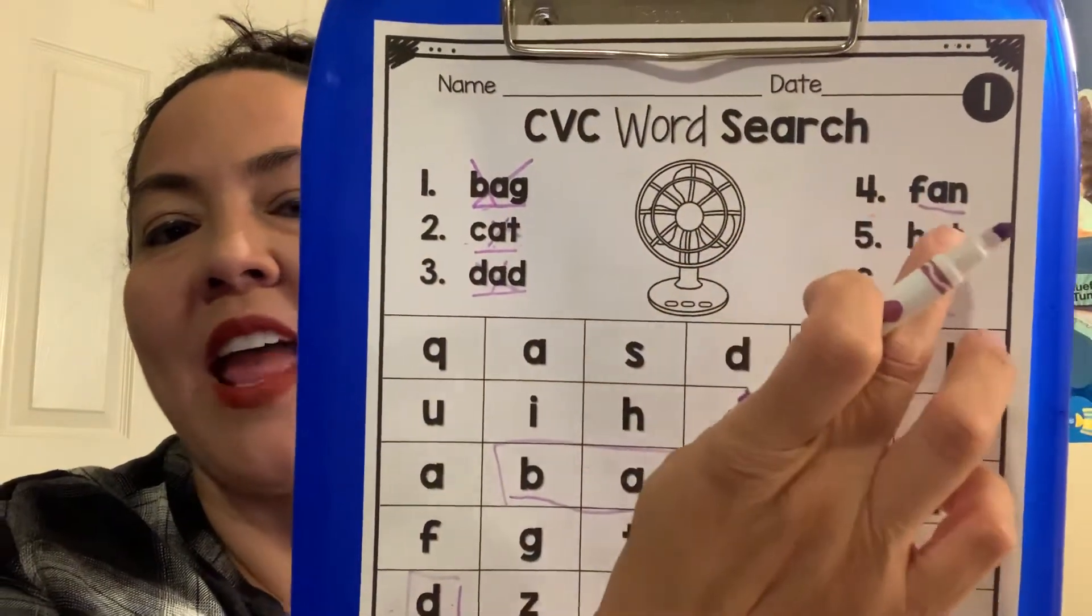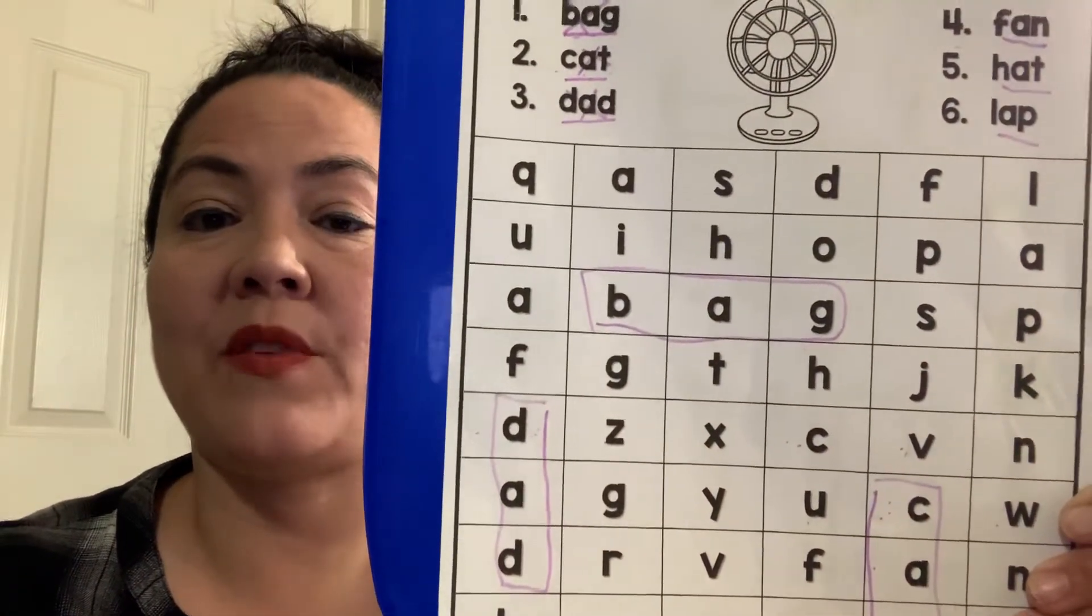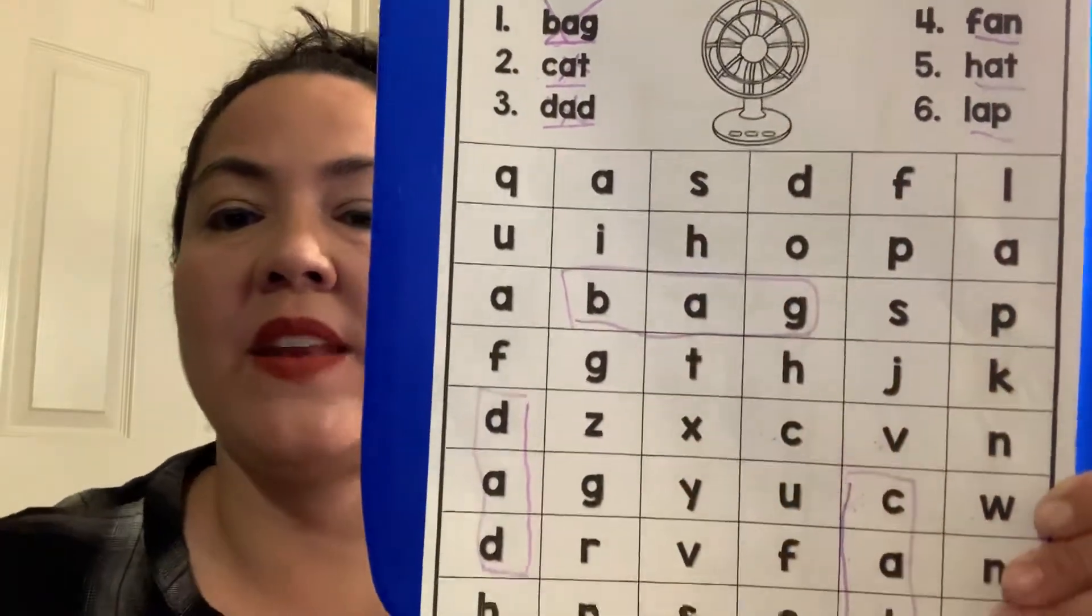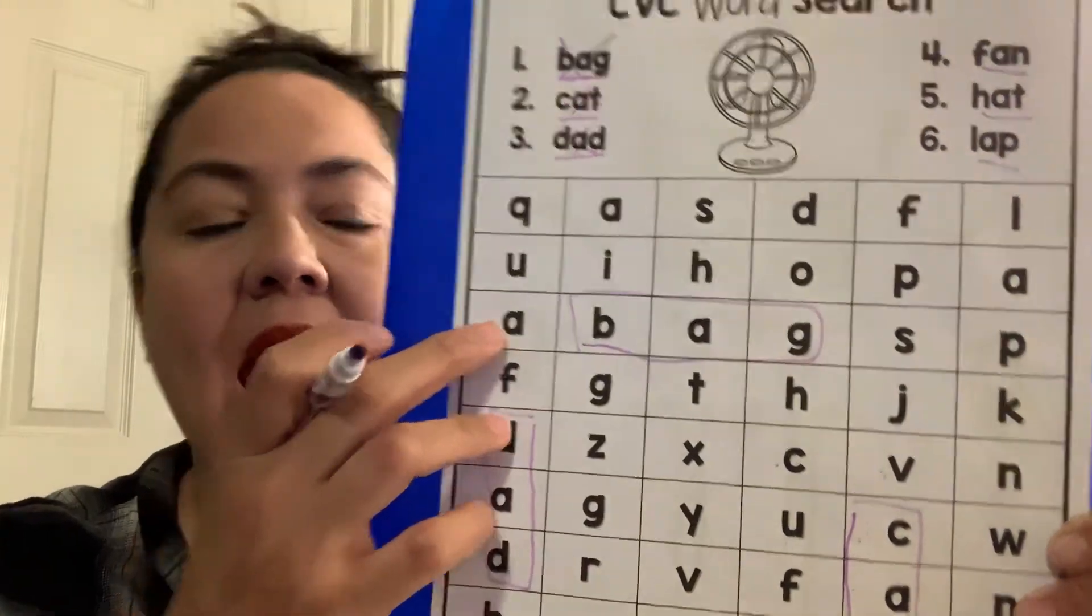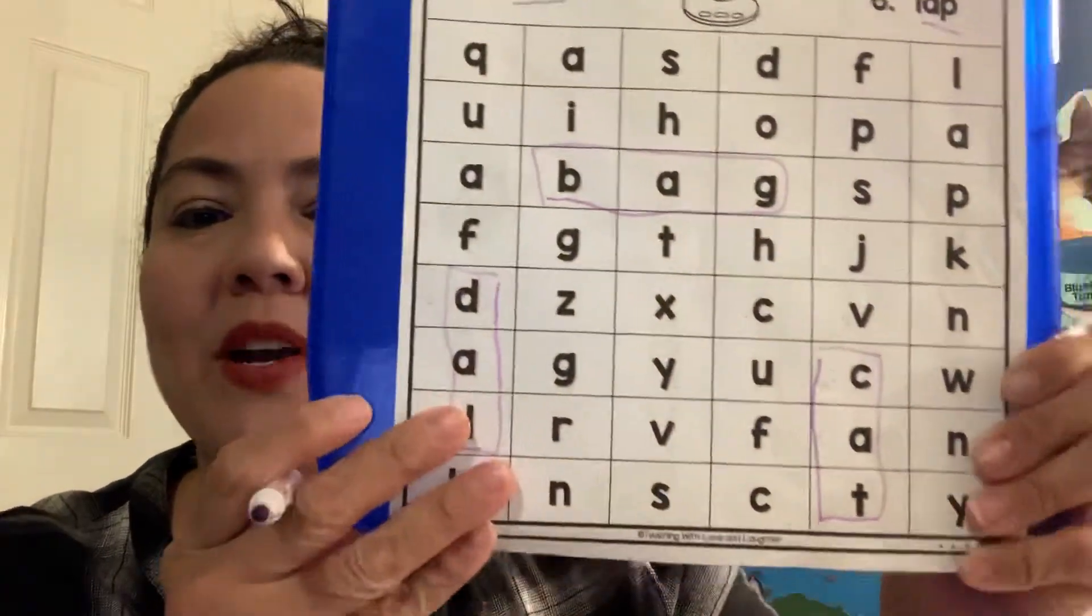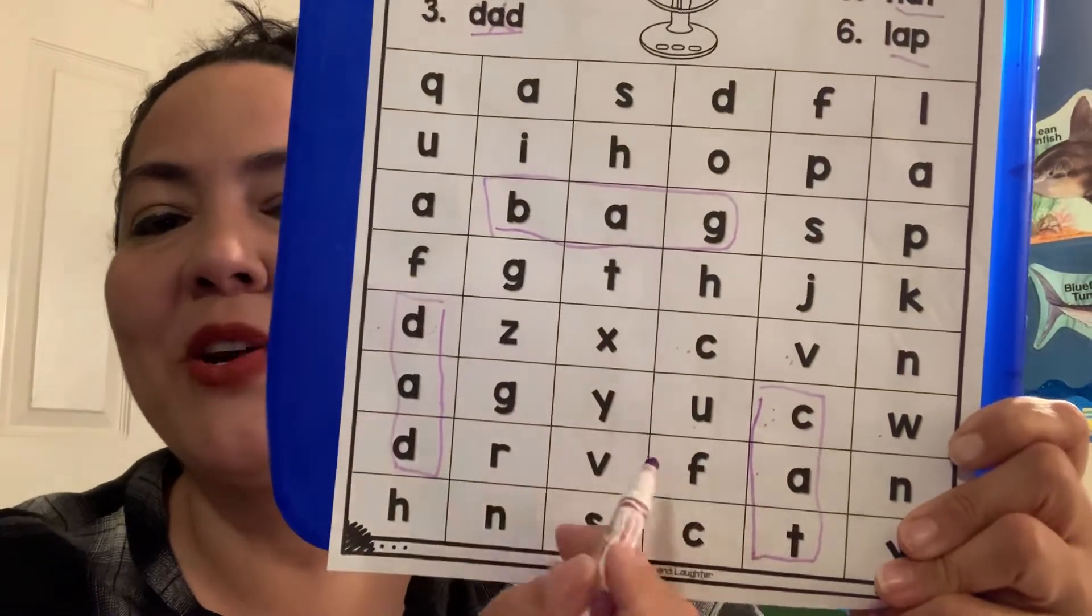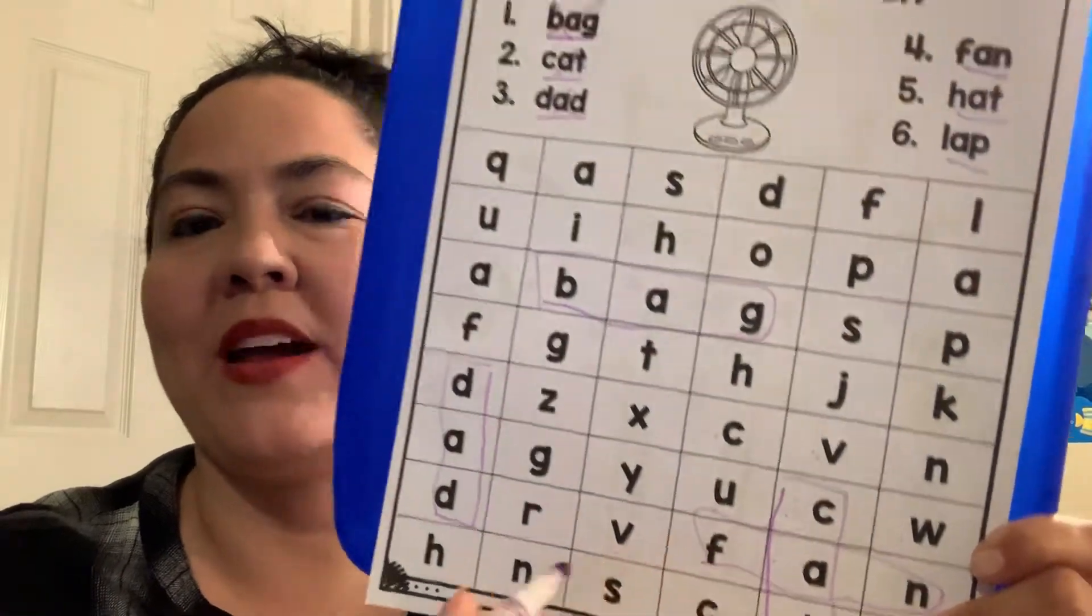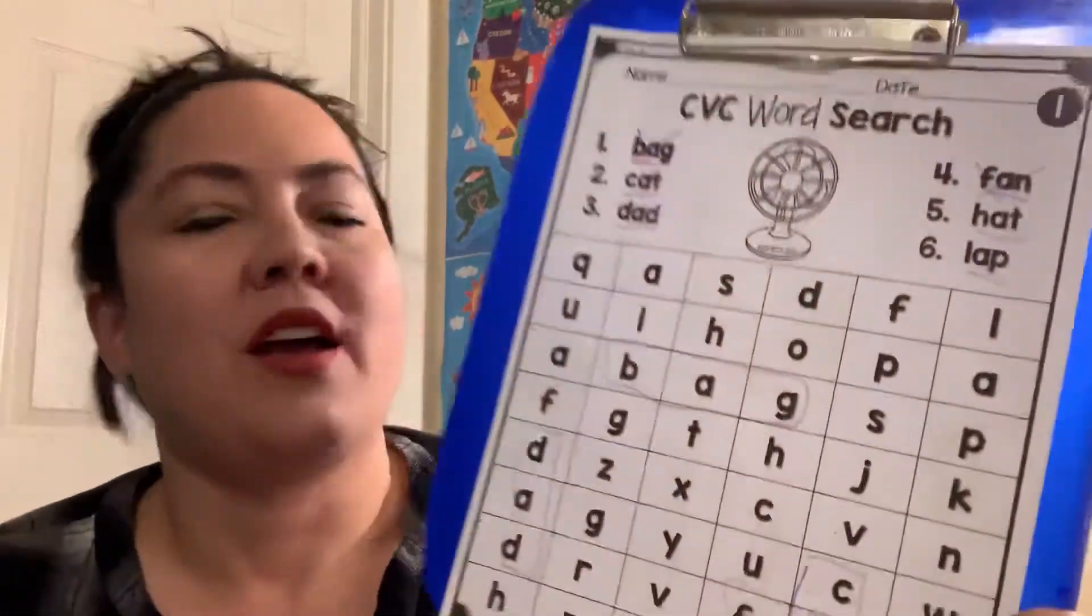Then the next word we have is f-a-n. Fan. Do you guys see any f's? Because fan starts with f. I see an f here. Is there an a? No. Okay. Let's find another f. What about here? F-a-n. Nope. That's not it. That's a u. Do we see any more f's? Do we see an a? We do. F-a-n. Fan. Good job, guys. It's kind of hard for Miss Lisa because she is looking at things backwards.